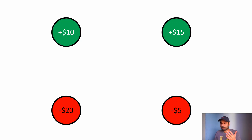First of all, the four spaces. If they land on any of them they get the dollar amount that you see. So gain $10, gain $15, lose $20, or lose $5.